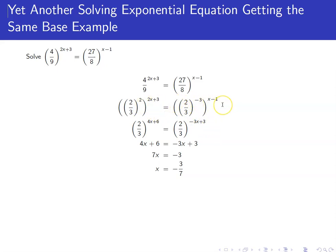On both sides now, we can multiply exponents together. So we get 2 thirds raised to the 4x plus 6 equals 2 thirds raised to the negative 3x plus 3.